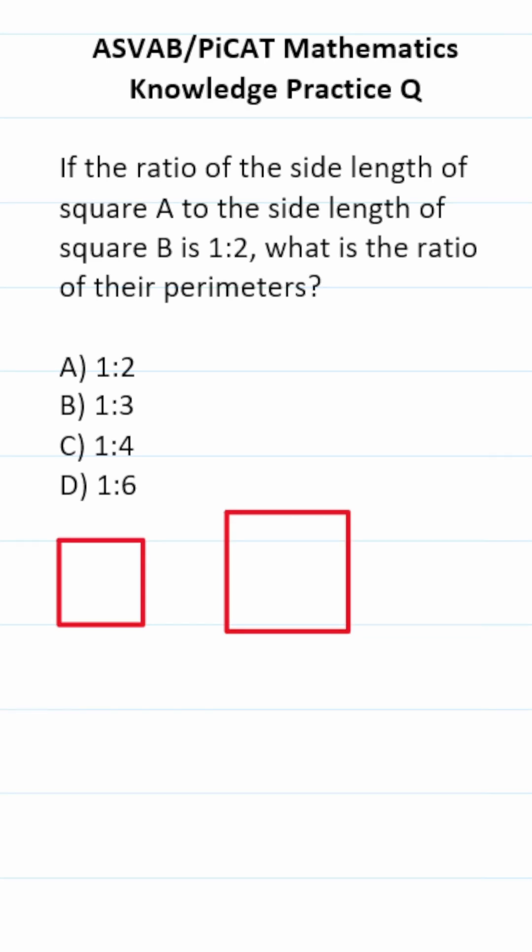ASVAB PiCAT Mathematics Knowledge Practice Test question says, if the ratio of the side length of square A to the side length of square B is 1 to 2, what is the ratio of their perimeters?